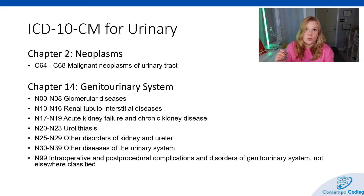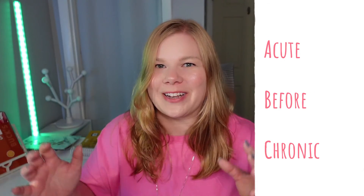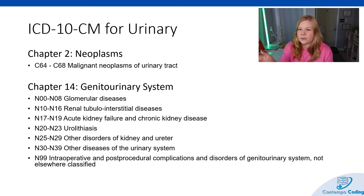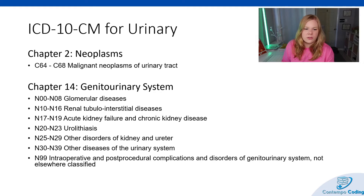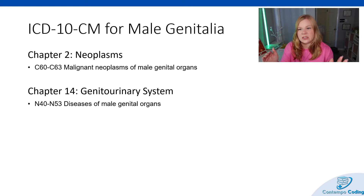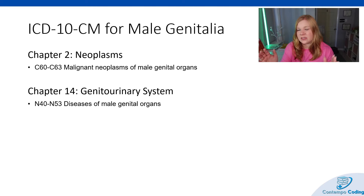When talking about a patient who has both acute and chronic kidney failure, one sequencing guideline in ICD-10-CM is that acute conditions get coded before chronic conditions. So if they have acute and chronic kidney failure, acute gets coded first. A good way to remember this is A-B-C: acute before chronic. We also have urolithiasis, other disorders of the kidney and ureter, other disorders of the urinary system, and intraoperative and postoperative complications of the genitourinary system. In the male genitalia section, cancers of the male genital organs are codes C60 through C63, and diseases of the male genital organs are codes N40 through N53.